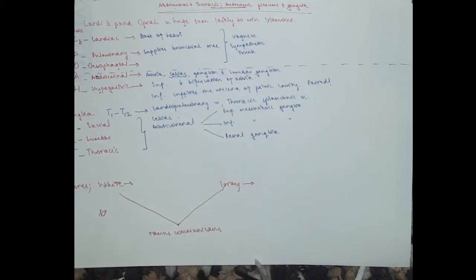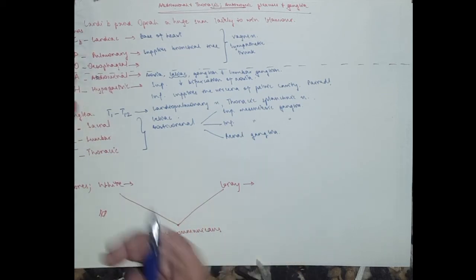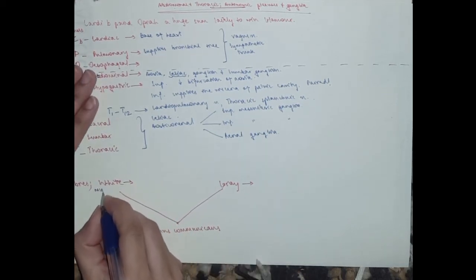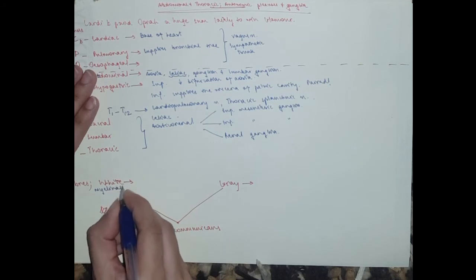So this is about the ganglia, and then we go to the fibers. So you've got white and grey ramus communicans, a two-way system again. So the white ones, one difference is that the white ones are myelinated, so they're white, and the grey ones are unmyelinated, and hence they're grey.